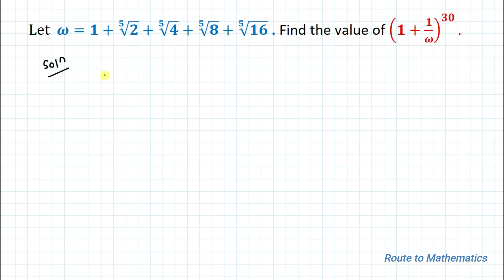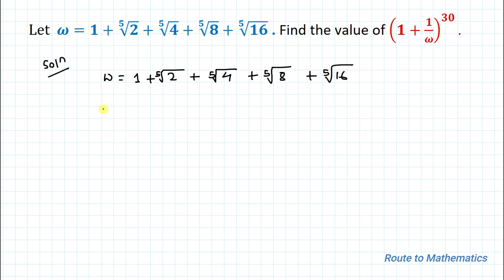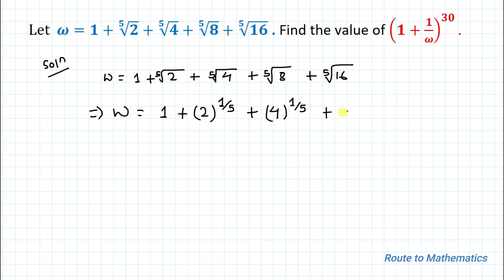We have the value of w: w equals 1 plus the 5th root of 2, plus the 5th root of 4, plus the 5th root of 8, plus the 5th root of 16. Our first step is to simplify the value of w so our calculation becomes a bit simpler. We can write w equals 1 plus 2 to the power of 1/5, plus 4 to the power of 1/5, plus 8 to the power of 1/5, plus 16 to the power of 1/5.